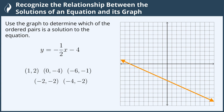So let's start with the first one, (1, 2). We'll start at the origin and move in the x direction positive one, and then we move in the y direction positive two, and our point (1, 2) is here. It does not fall on the line, so it is not a solution to our equation.